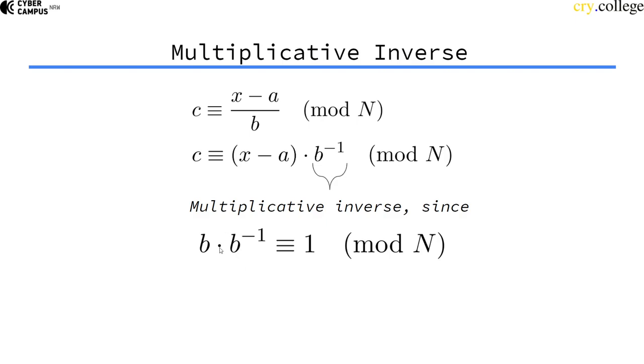So, the question now is, if we have this term here, the inverse of something, in an equation, how can we actually compute it? If b would be an actual value, how would we compute the inverse, the multiplicative inverse, mod n?